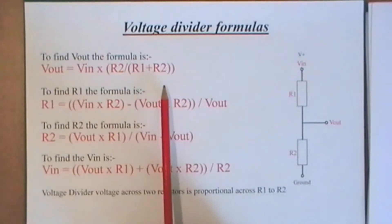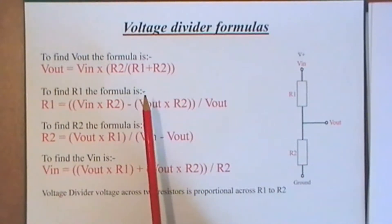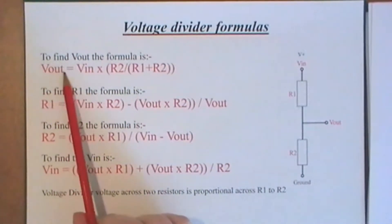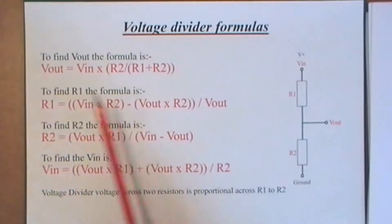But you may see it written slightly differently. That's the formula for working out the voltage at the point between the two resistors, given that you know what the resistors are and what voltage you're putting in.